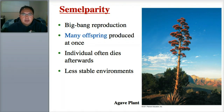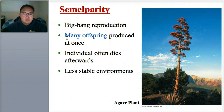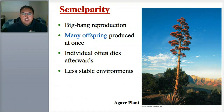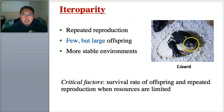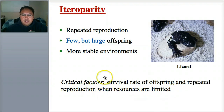One reproductive strategy is called semelparity — big bang reproduction — where a species produces many offspring all at once. Think of ants or cockroaches — mostly insects — that have hundreds of offspring at once, after which the individual often dies. They live in very unstable environments. The opposite is iteroparity, where species have repeated reproduction but very few, very large offspring — usually in more stable environments, like a lizard. The critical factors are survival rate of offspring and repeated reproduction when resources are limited.